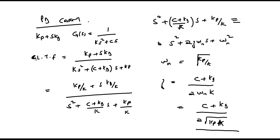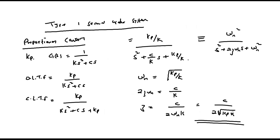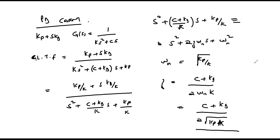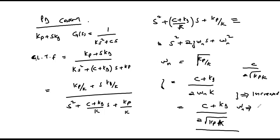Initially the damping factor was ζ = c/(2√(kp·k)), and now with PD control it is ζ = (c + kd)/(2√(kp·k)). From this we can see that the damping factor ζ has increased, but the natural frequency of oscillation remains unchanged.